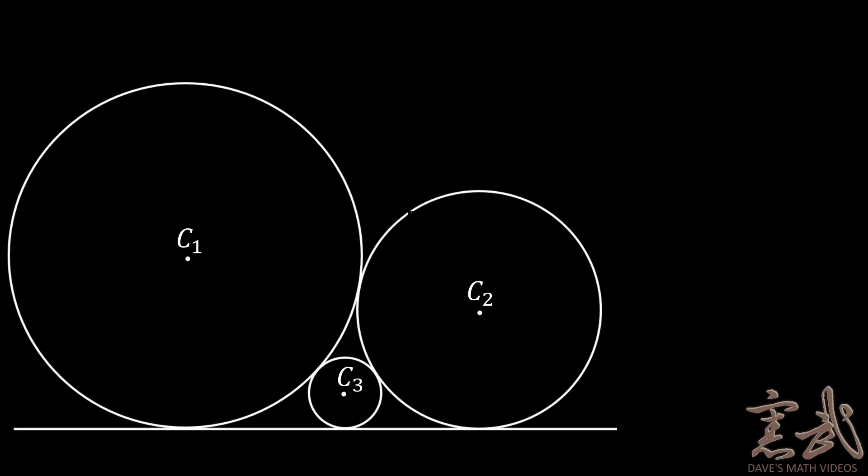First, we will connect C1 to C2 and we will indicate the radii of each circle. So circle C1 has a radius of R1 and circle C2 has a radius of R2.